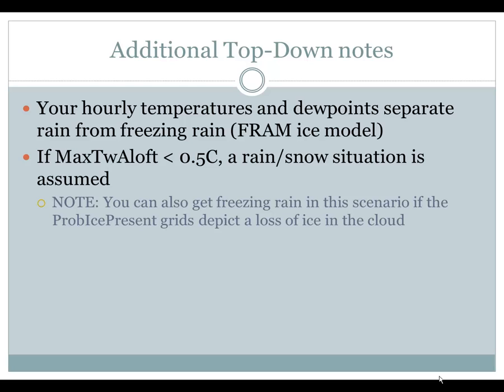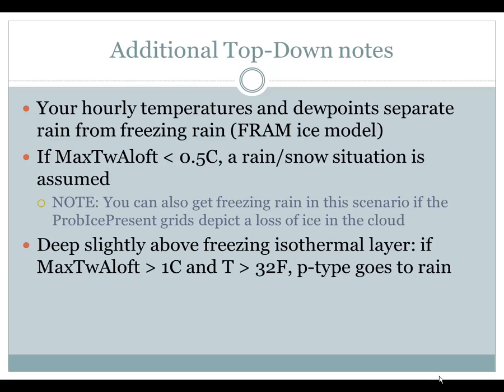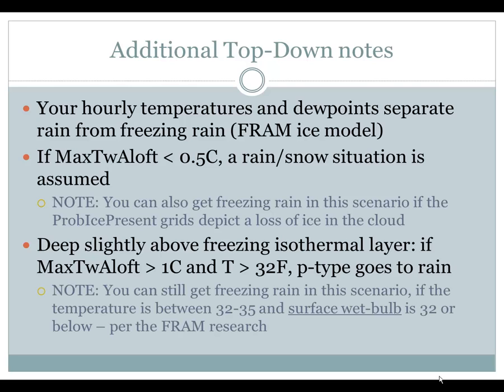However, if you have prob ice present grids at values less than 100%, you are going to see freezing rain pop up because you are suggesting there is losing enough ice in the cloud but still present to generate precipitation. The third note is a deep, slightly above-freezing isothermal layer — a check to improve performance of the Max Wet Bulb Aloft. If Max Wet Bulb Aloft is greater than 1°C and temperature is 32°F or greater, precipitation type will go to rain. But you can still get freezing rain if temperatures are between 32 and 35°F and the surface wet bulb is 32 or below — correlating back to the FRAM ice model research.